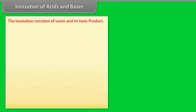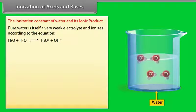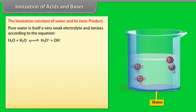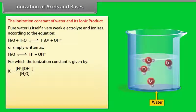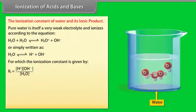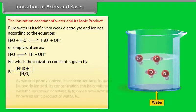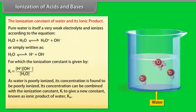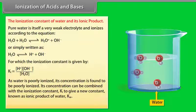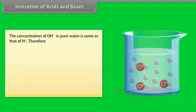Pure water itself is a very weak electrolyte and ionizes according to the equation for which the ionization constant Ki is equal to [H⁺][OH⁻] / [H₂O]. As water is poorly ionized, its concentration can be combined with Ki to give a new constant known as the ionic product of water, Kw. The concentration of OH⁻ in pure water is the same as that of H⁺, therefore Kw = [H⁺]².